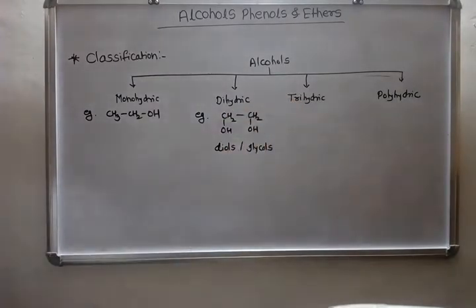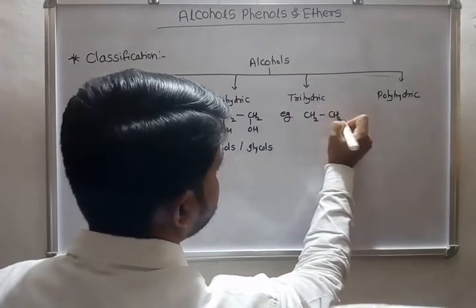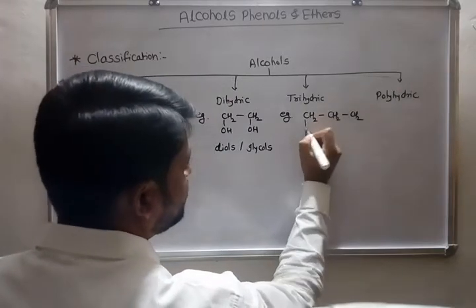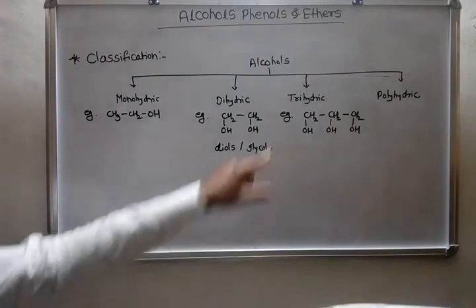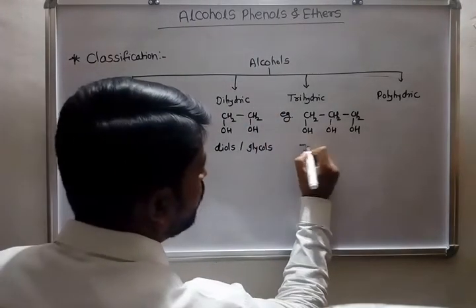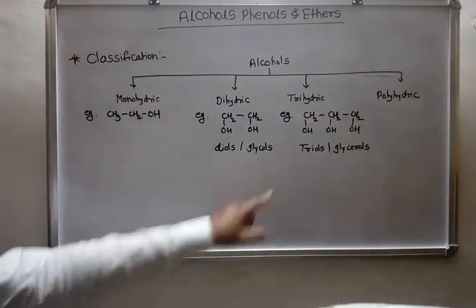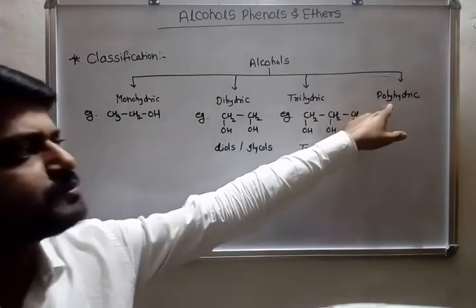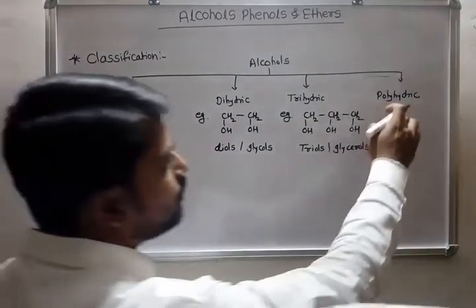Trihydric alcohols contain three hydroxyl groups situated on different carbon atoms. Trihydric alcohols are also known as triols or glycerols. Polyhydric alcohols contain more than three hydroxyl groups situated on different carbon atoms — it is called a polyhydric alcohol.